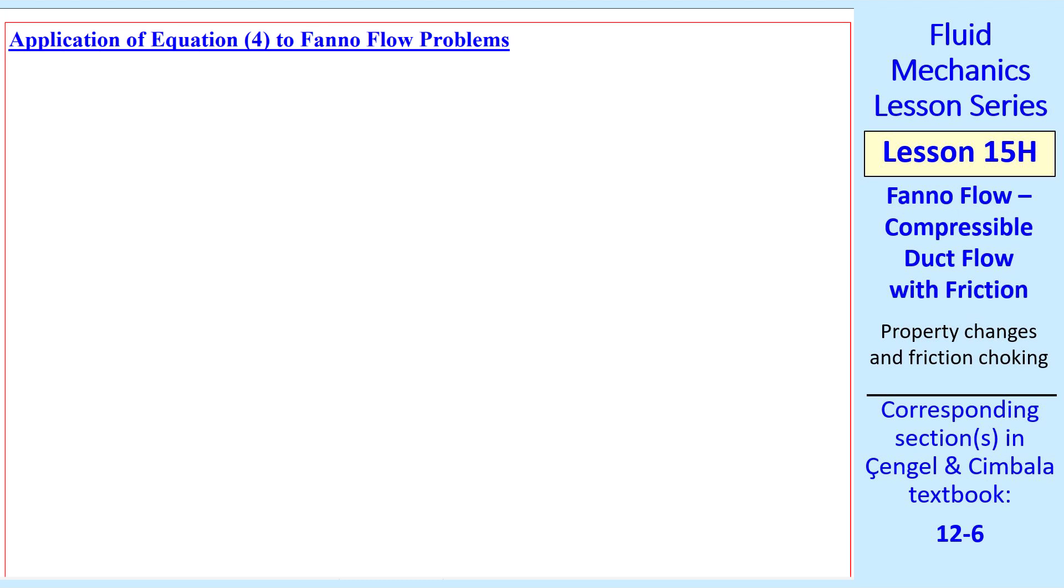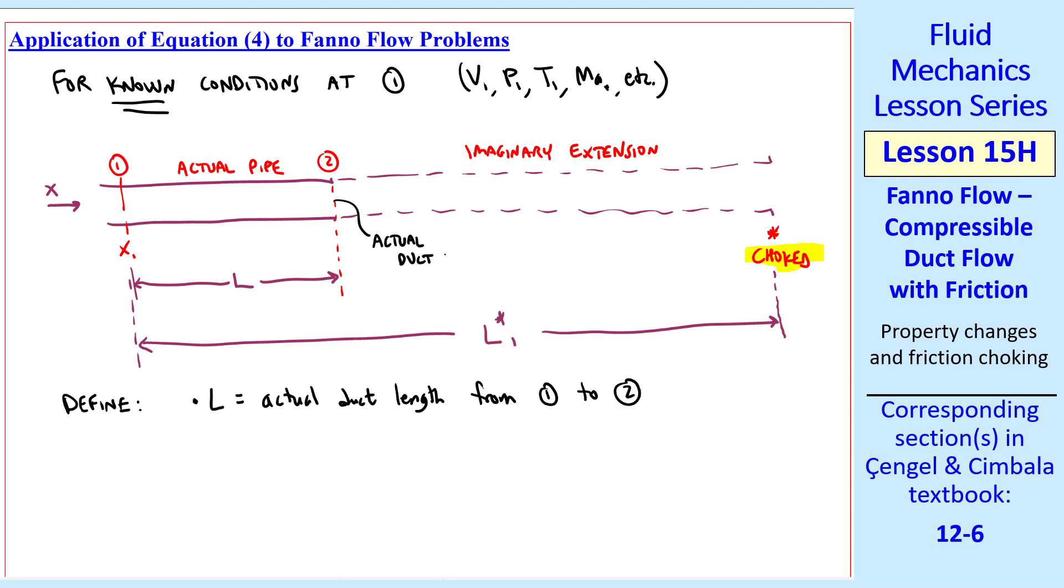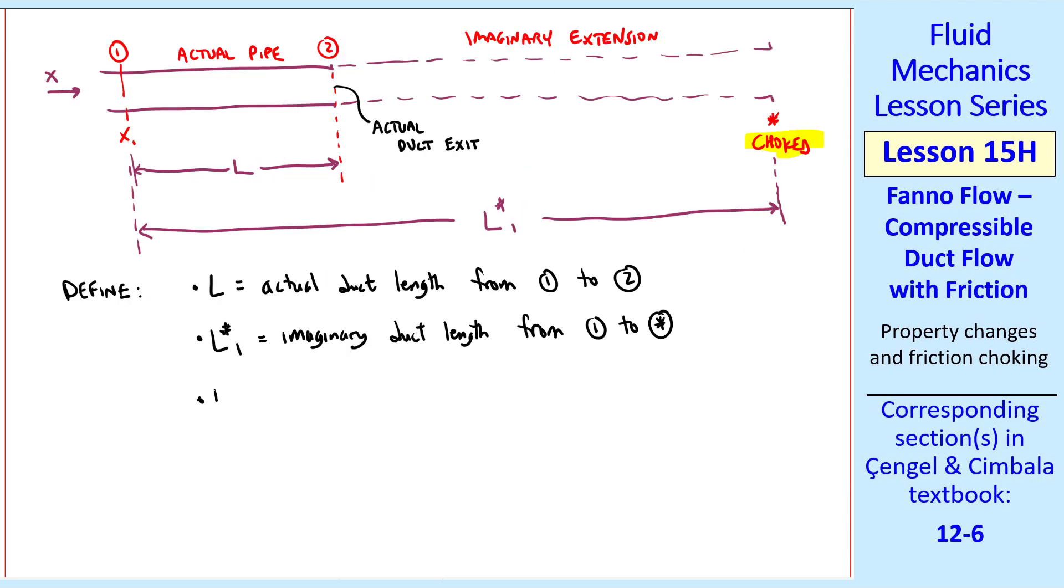Now let's apply equation 4 to Fanno flow problems. We assume that we have known conditions at 1: V1, P1, T1, MA1, etc. Let's let this section of pipe from 1 or X1 to the pipe exit be the actual pipe. So as we go downstream, X2 would be the actual location of the pipe exit. But now let's imagine an extension, which isn't physical but imaginary. And we go far enough downstream in this pipe or duct that we reach critical or sonic conditions. In other words, where the flow is choked. The distance from X1 to the end of this imaginary extension is what we're calling L star 1.